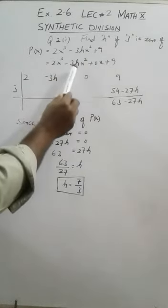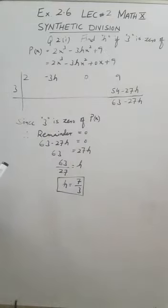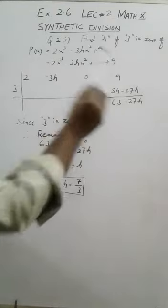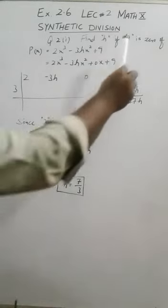So you will write 2x³ - 3hx² + 0x + 9, and then coefficients will be 2, -3h, 0, and 9. And 3 is zero of given polynomial, so you will take this 3 number over here.